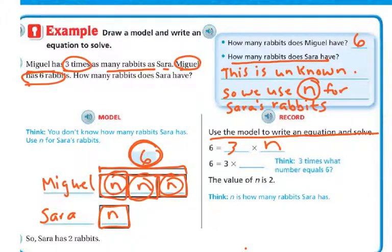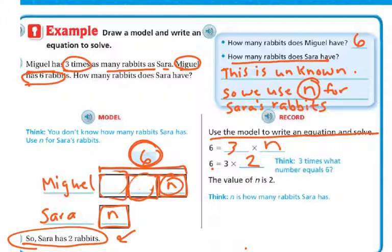And what do I know that is multiplied by 3 that equals 6? Well, 3 times 2 equals 6. So we know that Sarah is going to have 2 rabbits. So if I'm going to fill these out, I'm actually going to erase the Ns now, because now we know. We know that Sarah had 2, and that means each of these is 2, and we can double-check our math.